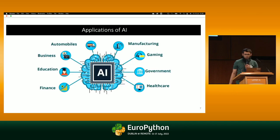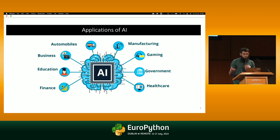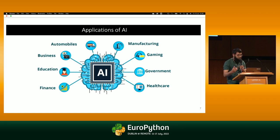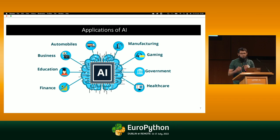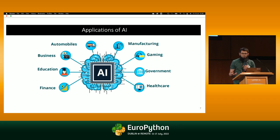There are a lot of applications of AI now. Computer science is not solving its own problems as much as it's trying to solve other problems. You can see efforts to make traffic experiences better through automobile applications, and solving problems in business, education, finance, manufacturing, gaming, government, and healthcare — the applications are limitless, but most of them come from domain expertise outside of computer science.